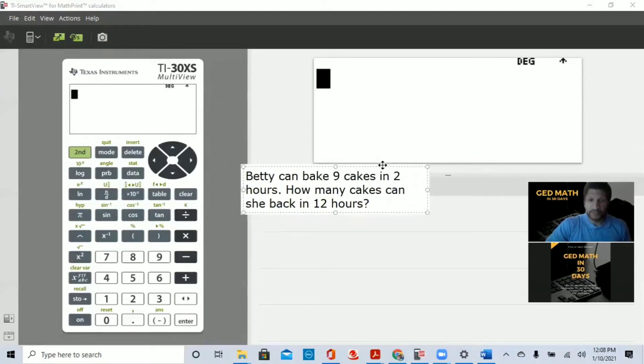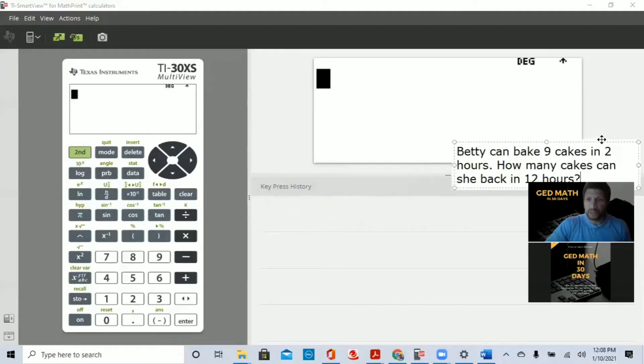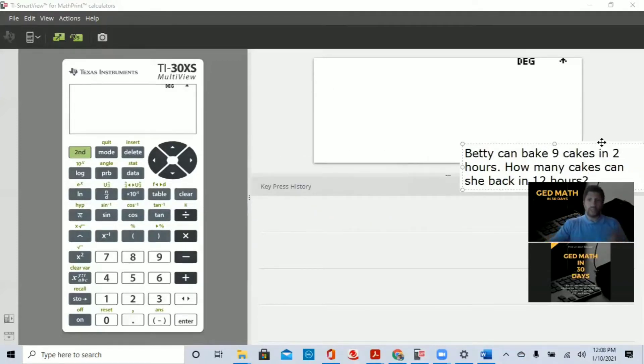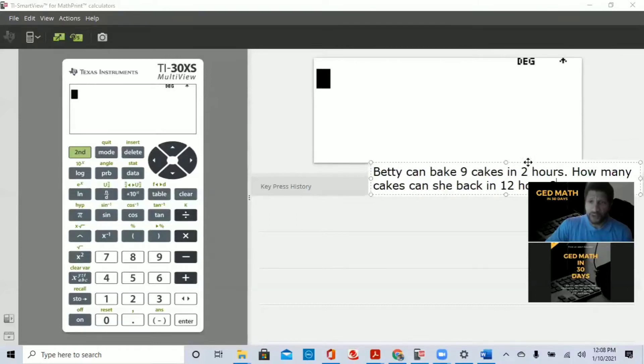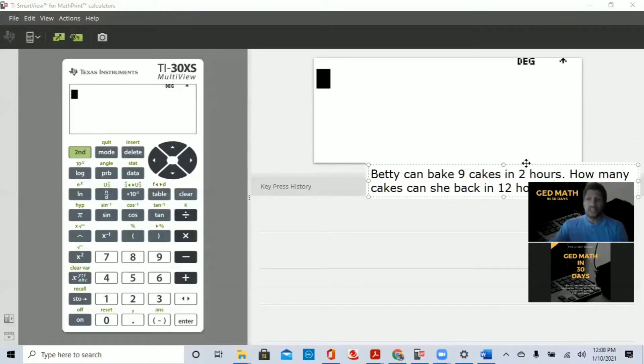Let me put this right here, so we'll be able to see the screen on the calculator and the keys that I press. So Betty can bake nine cakes in two hours. Now, our ratio that's given to us is nine cakes in two hours. So that's a ratio that we already know. Okay, so it's very important for you to understand that's a ratio given to us, nine cakes in two hours.